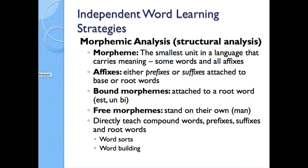When we're looking at independent word learning strategies we're really talking about morphemic analysis — the structural analysis of words. A morpheme is the smallest unit in a language that carries meaning, including some words and all affixes. Affixes are either prefixes or suffixes attached to a base or root word. An example of a prefix is 'pre,' meaning 'before' — so you have pretest, prefix. Bound morphemes attach to the root word, such as 'est,' 'un,' or 'by.'